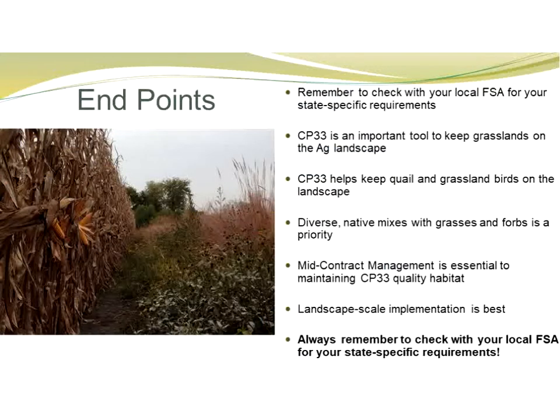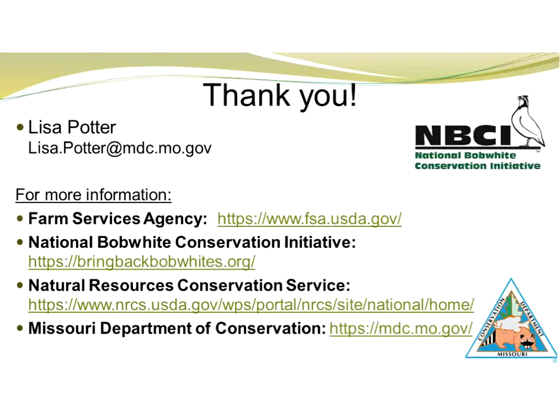Some take-home points: always remember to check with your local FSA office for state-specific requirements. CP33 can be a very important tool to help keep grasslands within the ag landscape. Diverse native mixes of grasses and forbs is essential. Mid-contract management is essential. And when possible, landscape scale implementation is best. Always check with your local FSA office. That is all the information I had to share — I went a little bit long, but if we have any time for questions, I'm happy to try to answer those.